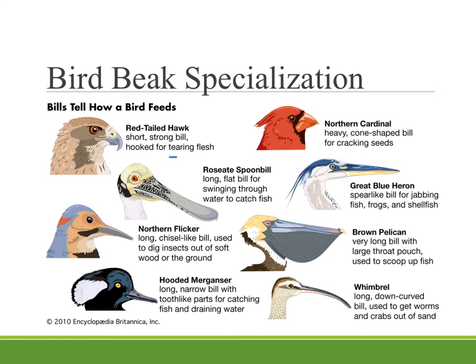For example, red-tailed hawks have strong hooked beaks because they are flesh eaters, while cardinals have very cone-shaped, thick beaks because they crack open seeds. Birds that fish might have long flat bills, or pelicans have this big scoop. Great blue herons can basically spear their dinner with their long, skinny, very pointed beaks. Birds that dig insects out of the ground or wood have a different shape of beak. These specializations allow birds to avoid competition so that each bird species has its own niche in the ecosystem, and that allows everybody to survive.